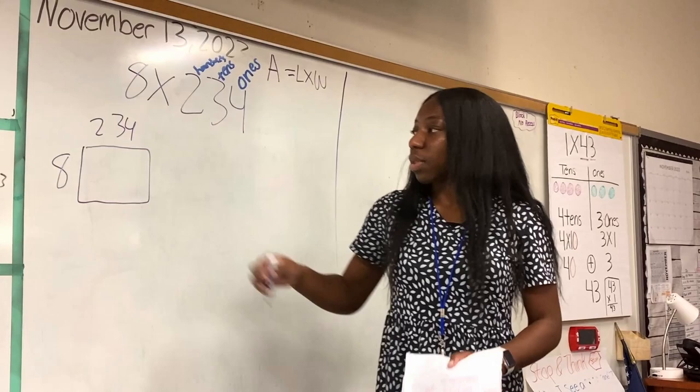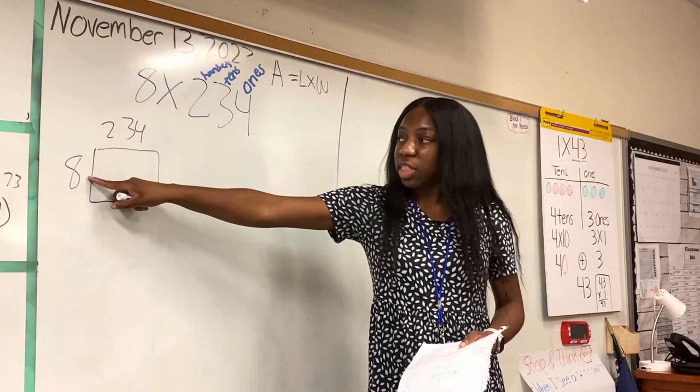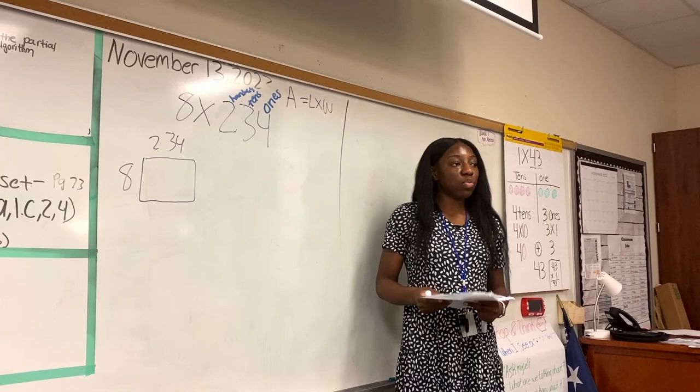I'm going to have eight right here, 234. So length times width. I'm going to do the length times the width. But what if that number is too hard to solve since it is such a large number? The easiest thing we can do is break it apart.